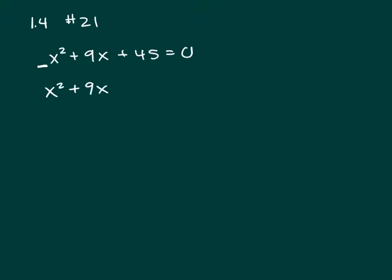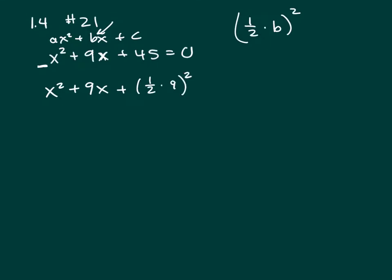This is in the form ax squared plus bx plus c. The b is always the coefficient on your x, so in this case b is 9. And when you complete the square, you have to use the formula one-half times b, quantity squared.